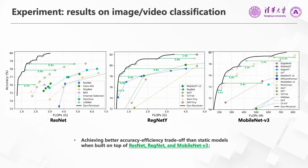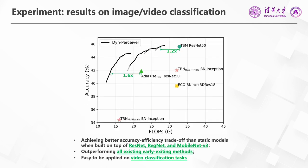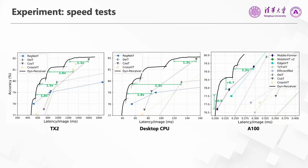Here are our main results. In each subfigure, the x-axis is the computational cost and the y-axis is the accuracy. We first conduct experiments on ImageNet classification with multiple visual backbones, including ResNet, RegNet, and MobileNet V3. The results show that our Dynamic Perceiver outperforms various static baselines and achieves a better trade-off between accuracy and efficiency than other dynamic early exiting approaches. Finally, we validate its effectiveness on the video classification task by replacing the ResNet50 backbone with our Dynamic Perceiver in the TSM framework. Our Dynamic Perceiver also demonstrates superior performance on different hardware platforms, including an Edge device TX2, a desktop CPU, and an A100 GPU.